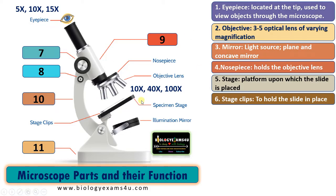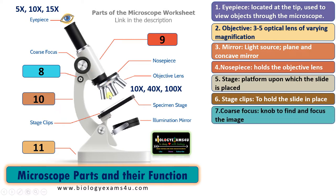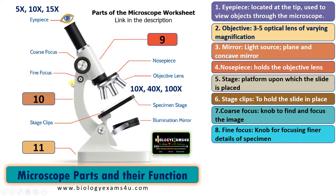Once we have placed the specimen on the stage, we will be viewing through the eyepiece using low power. Then we will use the coarse adjustment — this big knob that is rotated moves the body tube up and down to find a focused image. This is followed by the fine adjustment, or fine focus. The fine focus knob helps to focus sharper or for focusing finer details of the specimen. After fine focus, we can rotate the nosepiece to the next power to see the object at a much better magnification.